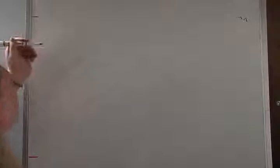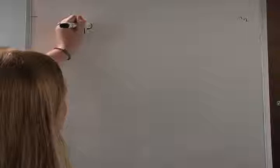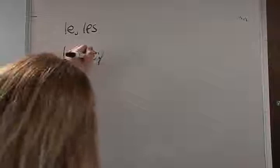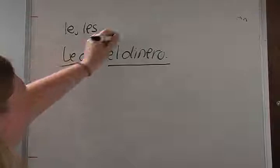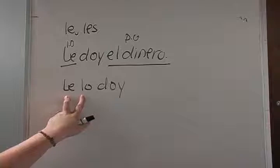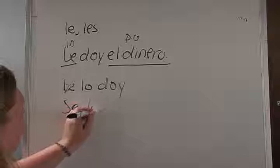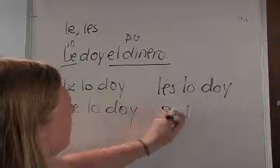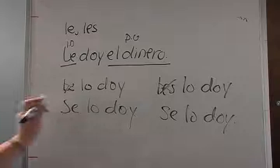We have our indirect object pronouns le and les. In Spanish, if we have a direct object pronoun — for example a sentence like le doy el dinero — and we want to rewrite this sentence: el dinero is your direct, le is your indirect. When we rewrite this, we would end up with le lo doy. But in Spanish you cannot have the two L's next to each other, so le has to become se — it becomes se lo doy. If this was les lo doy, it would still change to se lo doy. Anytime you have the two L's, you have to change the le or les to se.